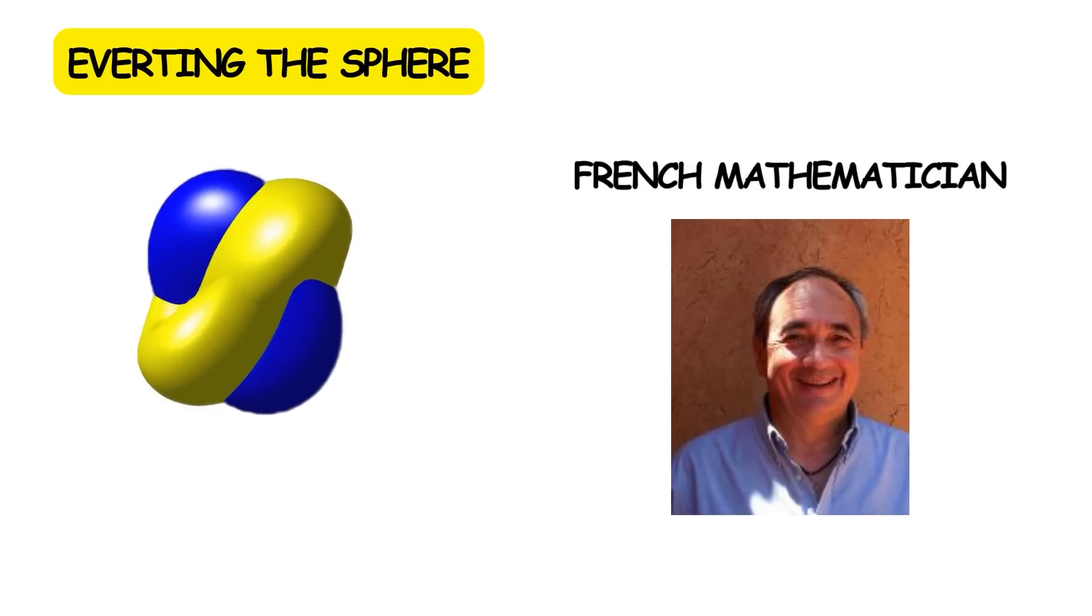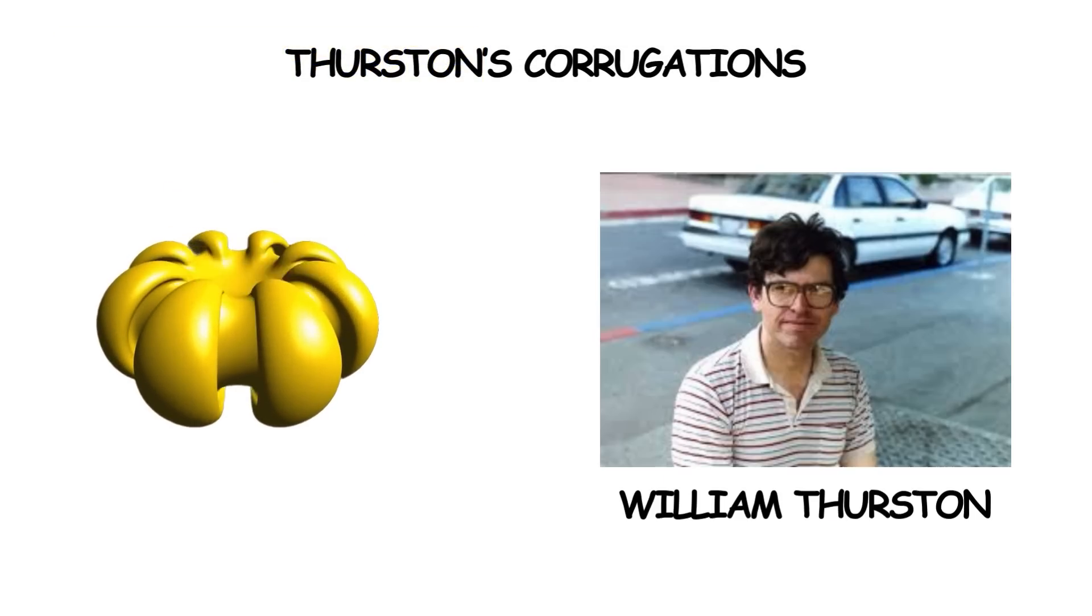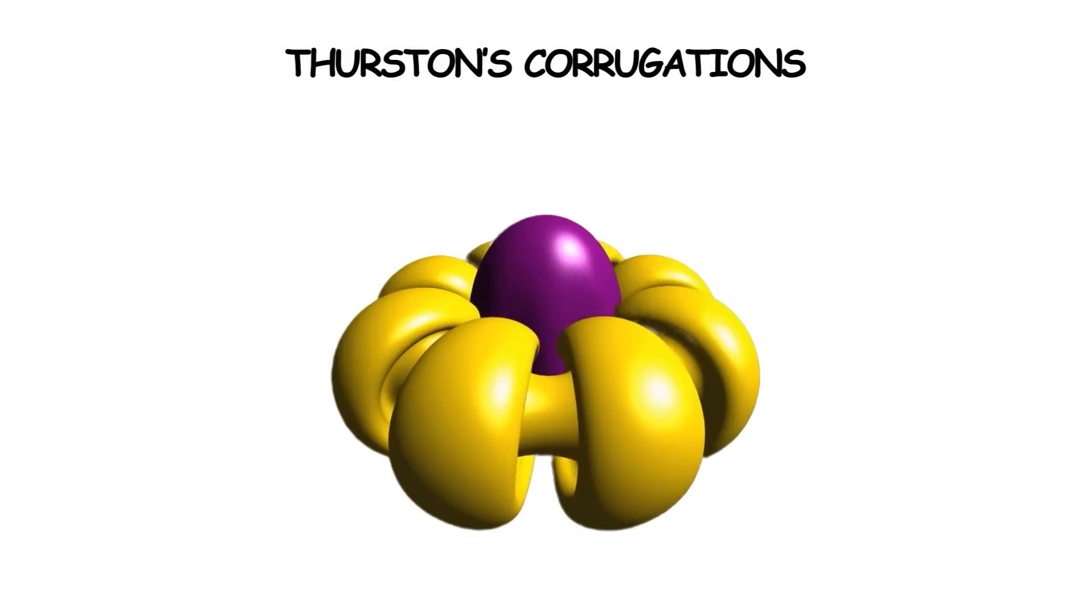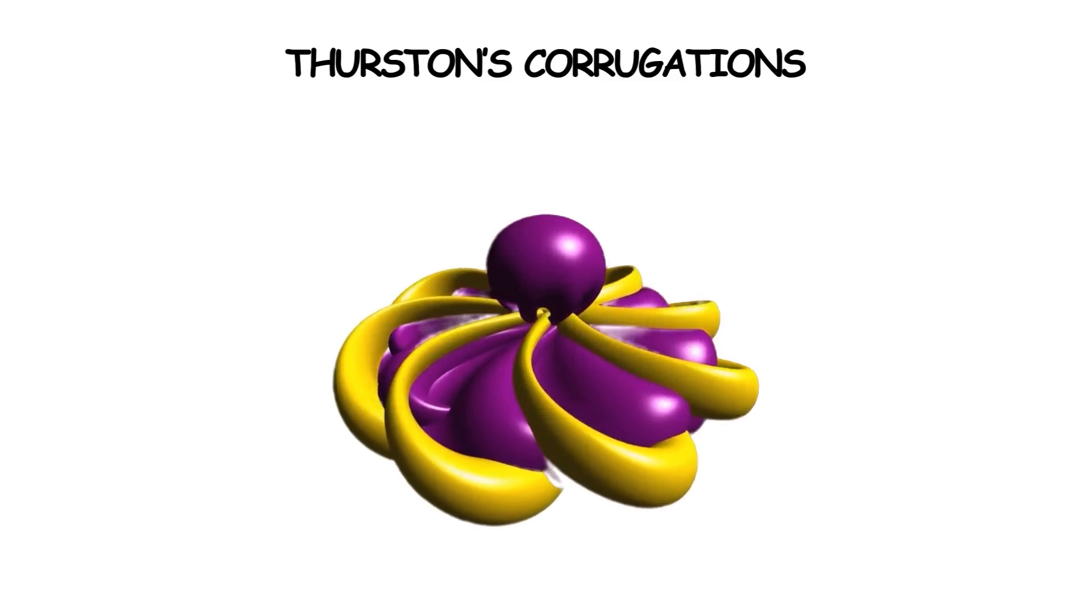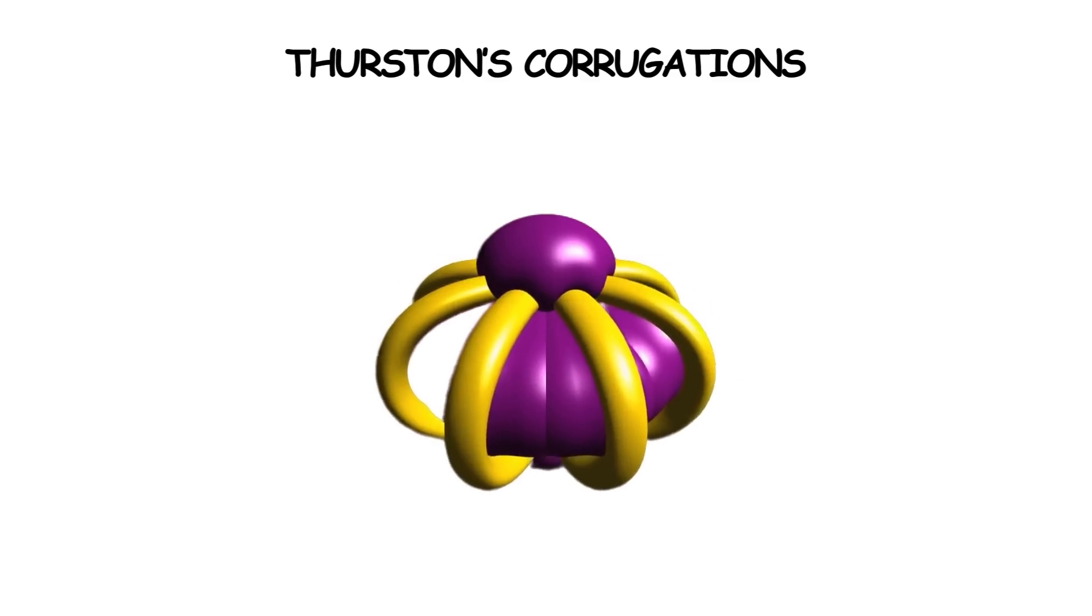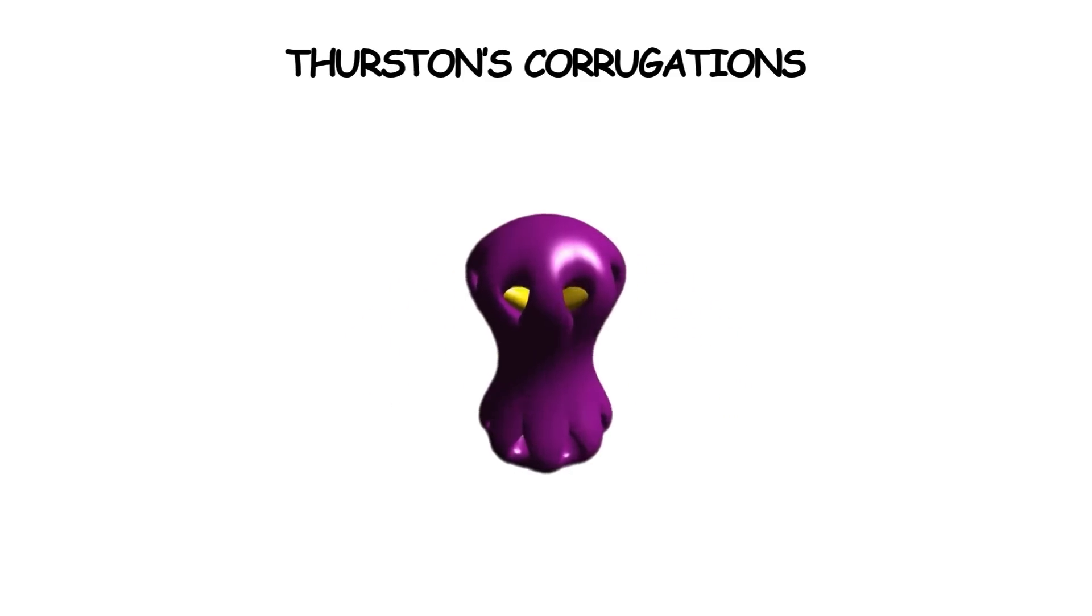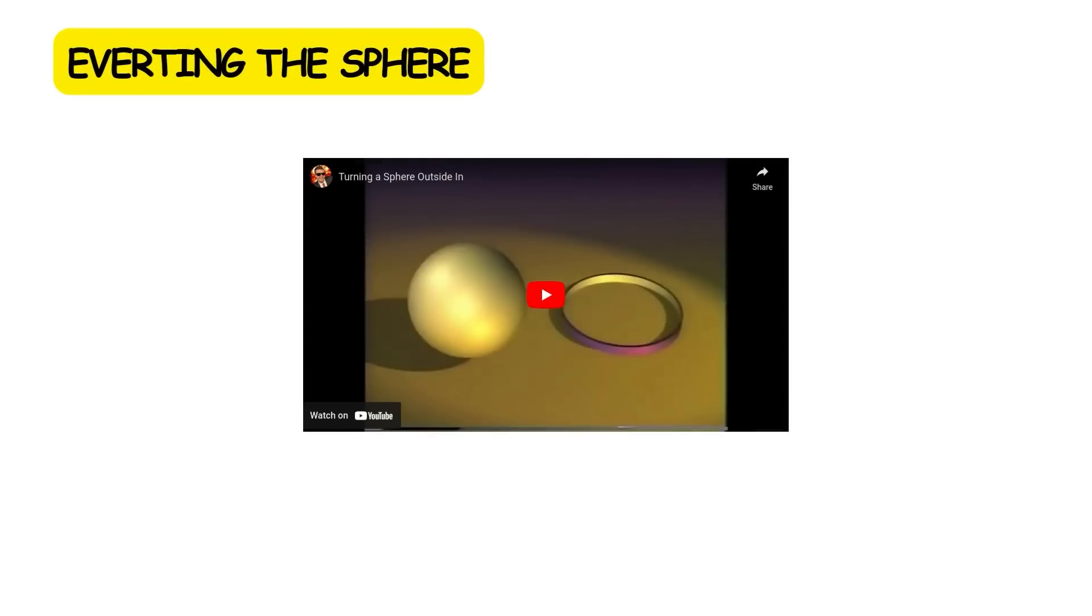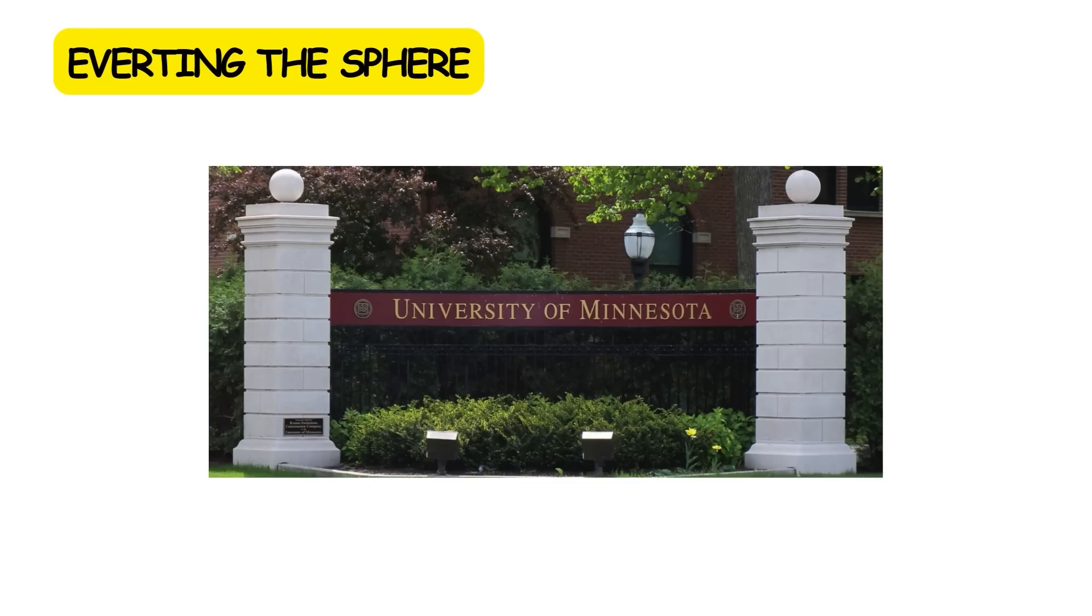Perhaps the most well-known method is Thurston's corrugations, named after American mathematician William Thurston. It involves dividing the sphere into guide strips, making the parts in between bulge into corrugations, pushing the caps through each other, turning each one a half turn in opposite directions, and pushing the strips through the center of the sphere. This was famously illustrated in the 1994 educational video, Outside In, developed at the former Geometry Center of the University of Minnesota.